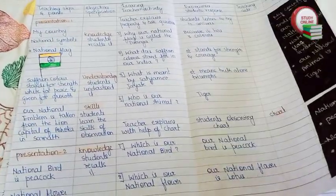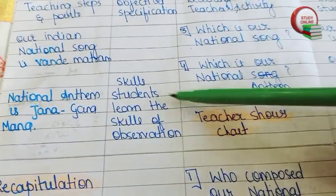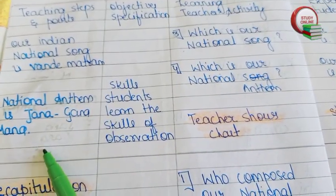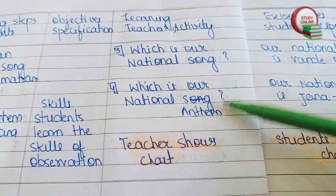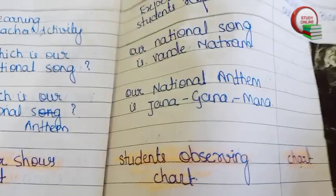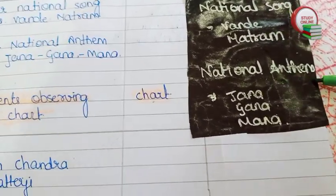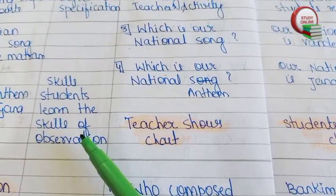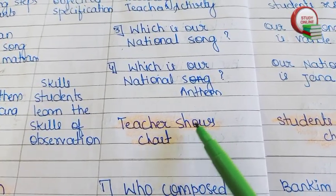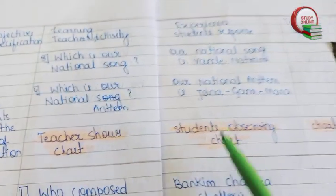Now let's turn the page and see the rest of Presentation Two. Here you can see the explanation and presentation part. The remaining questions include: which is our national song and which is our national anthem. The expected answers are: national song — Vande Mataram, national anthem — Jana Gana Mana. The teacher again shows a chart and students observe.